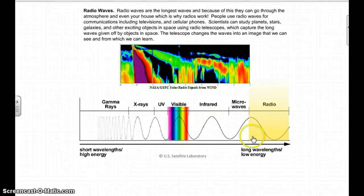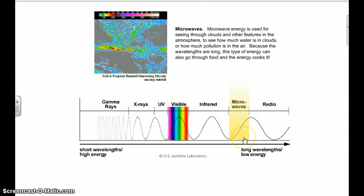As we move to the next one, microwaves. Microwaves energy is used and seen through clouds. You are going to need to know all of these different waves of energy and what they do. We see through clouds with microwaves. We can see how much pollution is in the air. These are long waves, so they have less energy, so we can actually cook our foods with it because it has energy, but it's not dangerous energy.